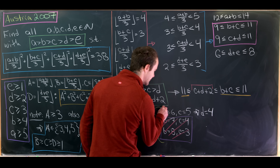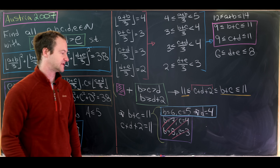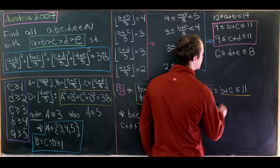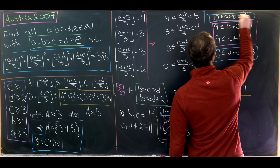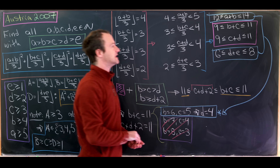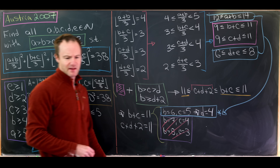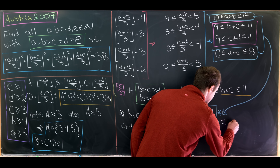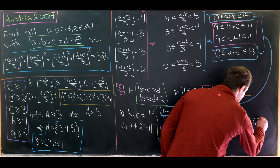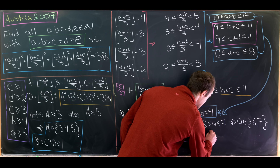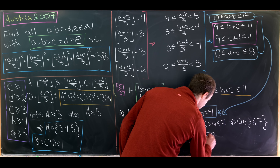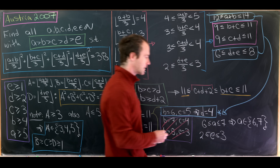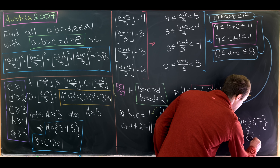Now with B=6, C=5, D=4 known, plugging into the remaining inequalities gives 6 ≤ A ≤ 7, so A ∈ {6, 7}. Similarly, 6 ≤ D+E ≤ 8 with D=4 gives 2 ≤ E ≤ 4, but since E < D=4, we get E ∈ {2, 3}.